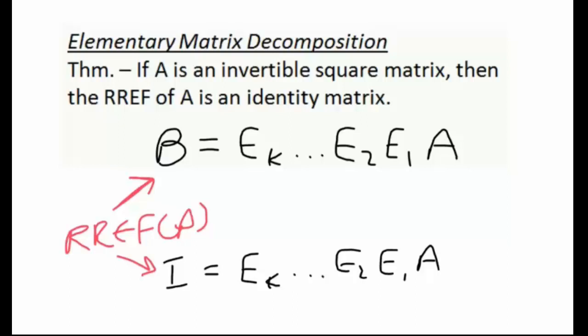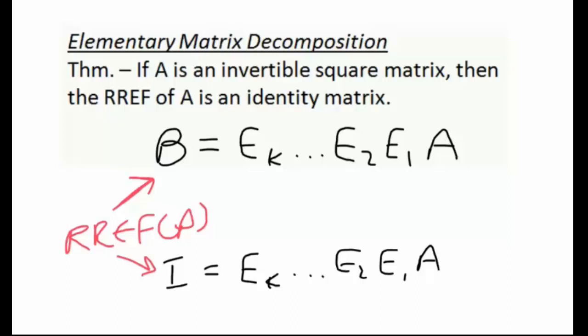The proof of this theorem we're going to talk about in chapter 3. And what I want to do next is just add to that last theorem a little bit. The last theorem gives us that if A is invertible, its reduced row echelon form is going to be an identity matrix.